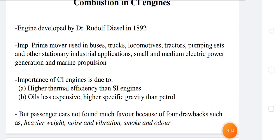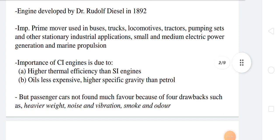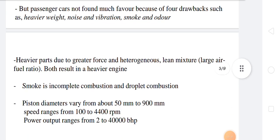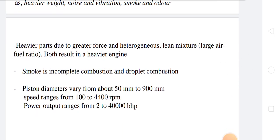CI engines are heavier because heavier parts are used due to the great forces involved and the heterogeneous lean mixture — that is, it has a high air-fuel ratio. Due to this the engine becomes heavier. Smoke comes out of this engine because of incomplete combustion.